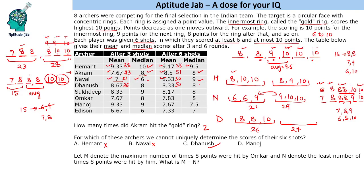We can check Manoj to verify. Manoj's first three total is 28 with a median of 9, so his first three scores are 9, 9, 10. The grand total is 46, meaning the last three sum to 18, which is only possible as 6, 6, 6. The first-three median is 9 — verified. Arranging all six in ascending order: 6, 6, 6, 9, 9, 10, and the overall median is 7.5 — also matching. So for Manoj we can uniquely determine the scores.